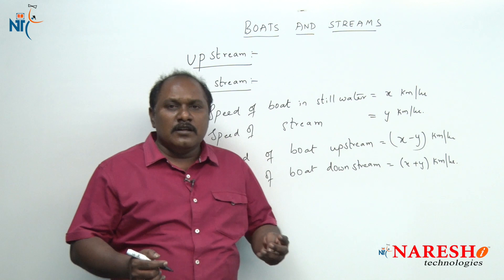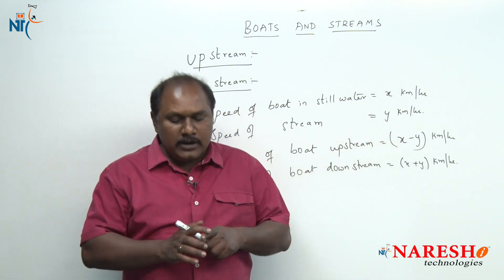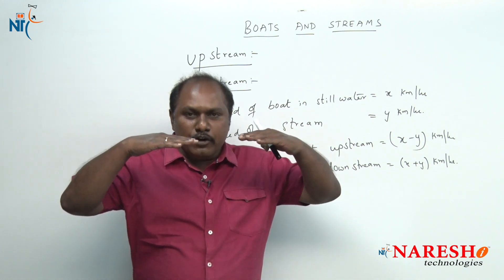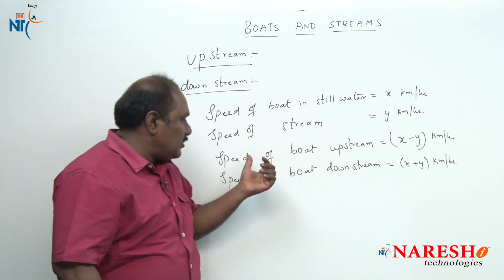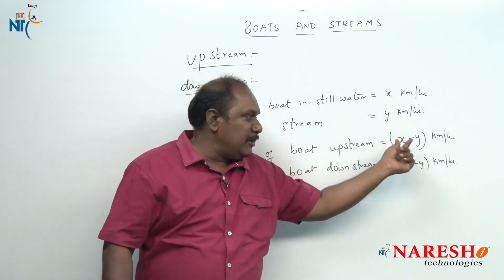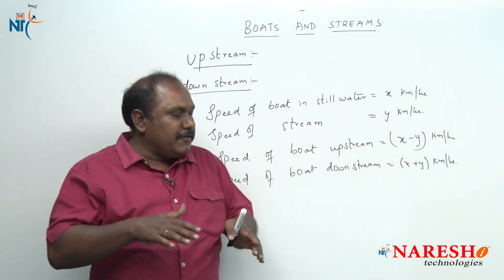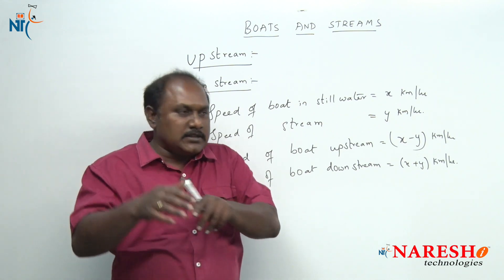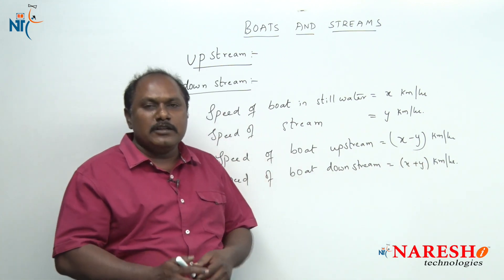It is simple common sense. Suppose a boat is traveling in still water at x kilometers per hour and the water is flowing opposite to the boat — definitely the speed of the boat decreases. That is why the speed of the boat upstream is x minus y. And if the boat travels along with the flow of the stream, definitely the speed of the boat should increase. So that is the reason the speed of the boat downstream is x plus y kilometers per hour.